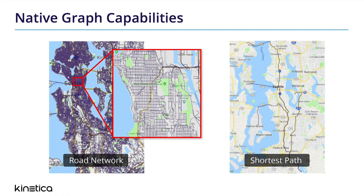Kinetica can even transform your relational data into graph networks and automatically synchronize them as new data rolls in, so you can analyze location information and deliver real-time routing all in a single platform.